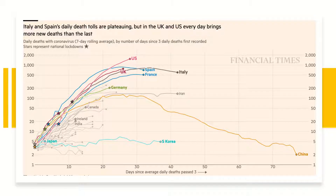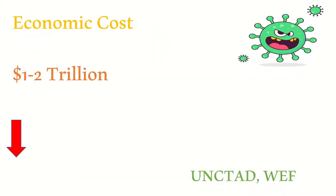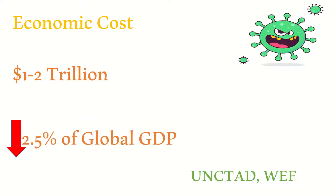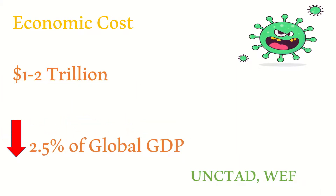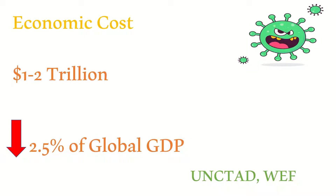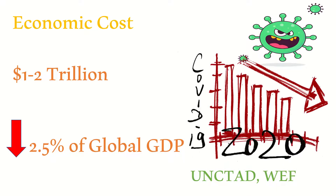The control and prevention measures seem to be working, as China, South Korea, Japan, and other countries have slowed down the COVID-19 spread. But the lockdowns have steep economic costs. The coronavirus is expected to reduce global income by 1 to 2 trillion dollars and reduce the global growth rate by 2.5 percent, which is a threshold for recession.